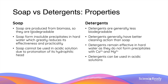Soaps are produced from biomass so they are biodegradable, whereas detergents, which are synthetic, are less biodegradable — a disadvantage of using detergents compared to soaps. However, soaps can form insoluble precipitates called scum when used with hard water, greatly reducing their effectiveness. Detergents generally have better cleaning action than soaps and remain effective in hard water as their structures do not form precipitates with calcium and magnesium ions. Soap cannot be used in acidic solutions due to protonation of its hydrophilic head, whereas detergents can be used in acidic solutions without any reduction in effectiveness.